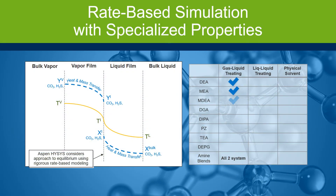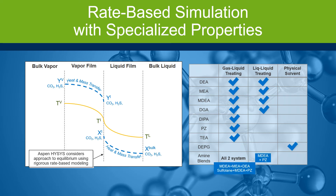With Aspen Hysys, the acid gas functionality includes rate-based simulations with specialized property packages for simulating a wide range of systems. Initially introduced in 2013 with Aspen Hysys V8.3, the acid gas functionality is a breakthrough technology that has been continually improved.